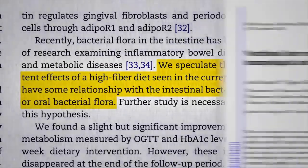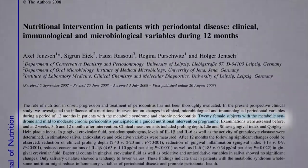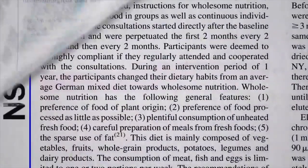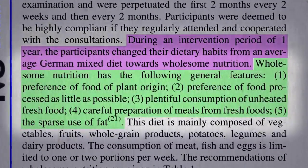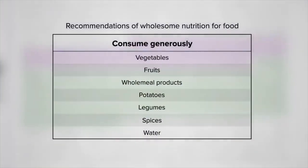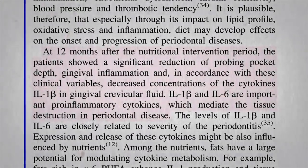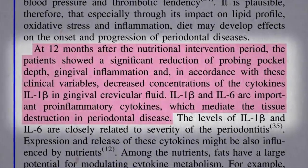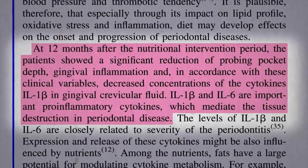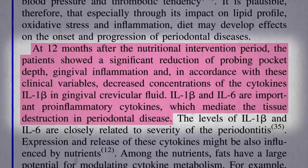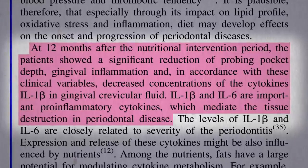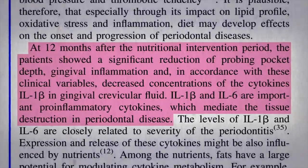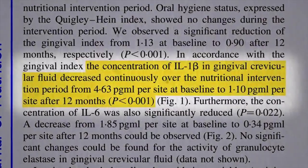German researchers took 20 women with mild to moderate chronic periodontitis and for a year tried to transition their diets towards more wholesome nutrition — meaning more plant foods, whole foods, and fresh foods — centering their diets around vegetables and fruit, whole grains, potatoes, and legumes like beans, split peas, chickpeas, and lentils. After 12 months, patients showed a significant reduction of probing pocket depth, gingival inflammation, and — measured for the first time — decreased concentrations of inflammatory chemicals inside the crevice between the tooth and gums, thought responsible for tissue destruction in periodontal disease, by as much as 75%.